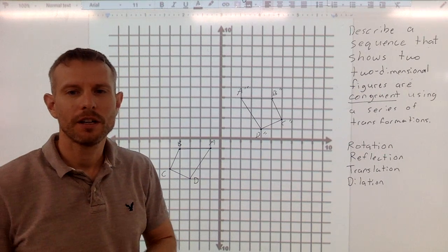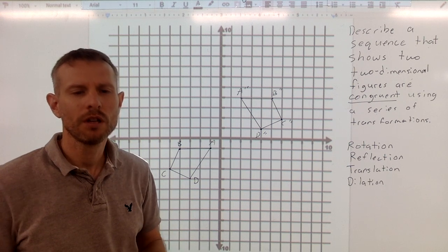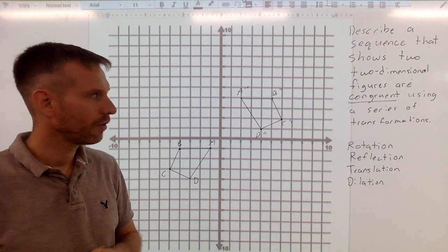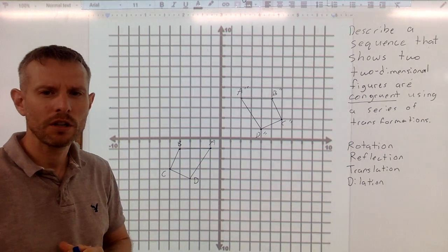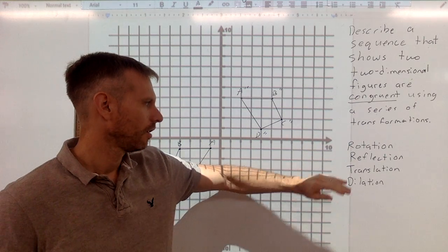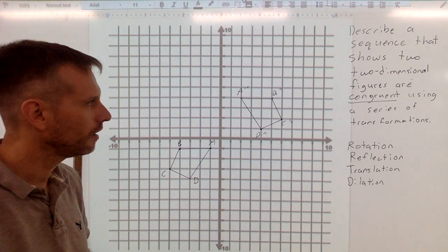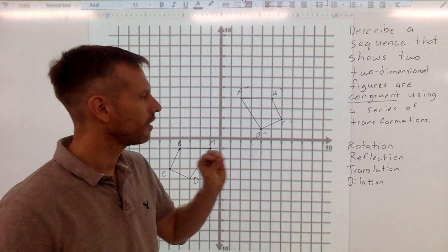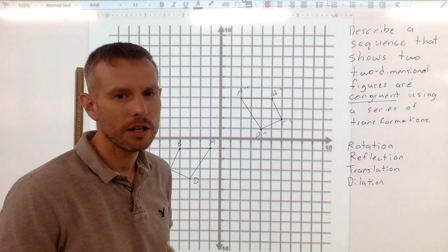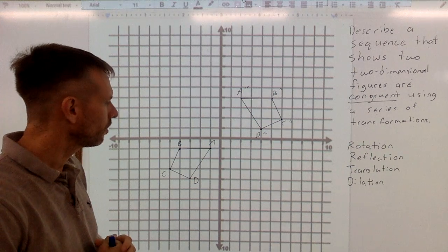Okay, in this video, we're going to describe a sequence that shows that two two-dimensional figures are congruent using a series of transformations. If you recall, the transformations that we've studied are rotation, reflection, translation, and dilation. Since this lesson is specifically on congruent figures, we won't need the dilation. Dilation is for similar figures. Okay, so let's get started.